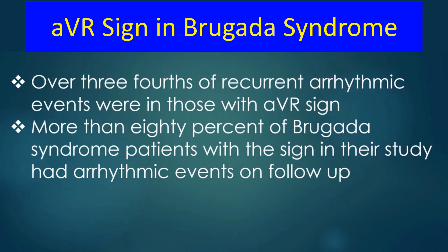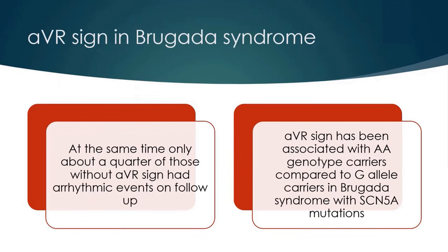Over three-fourths of recurrent arrhythmic events were in those with the AVR sign. More than 80% of Brugada syndrome patients with the sign in their study had arrhythmic events on follow-up. At the same time, only about a quarter of those without the AVR sign had arrhythmic events on follow-up. The AVR sign has been associated with AA phenotype carriers compared to G allele carriers in Brugada syndrome with SCN5A mutations.